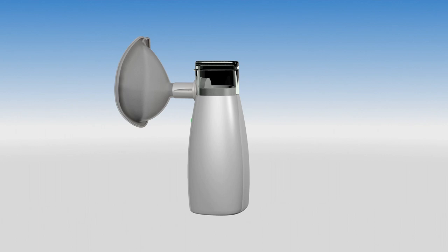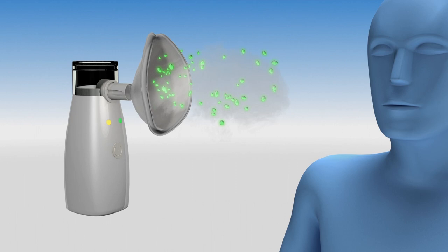Researchers used a nebulizer machine to spread the coronavirus in the air and on several surfaces in a controlled environment. The device was used to emulate how the coronavirus would disperse if an infected individual coughed.